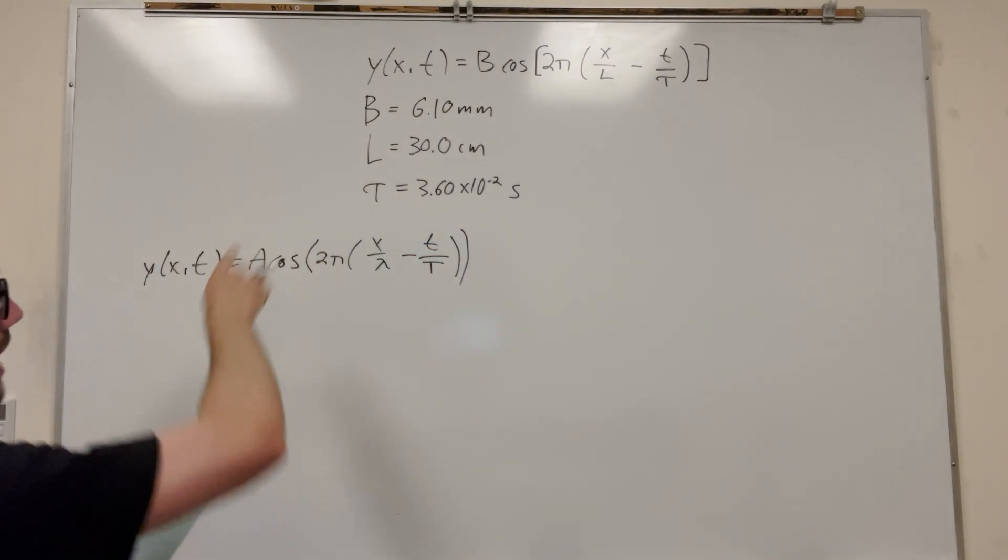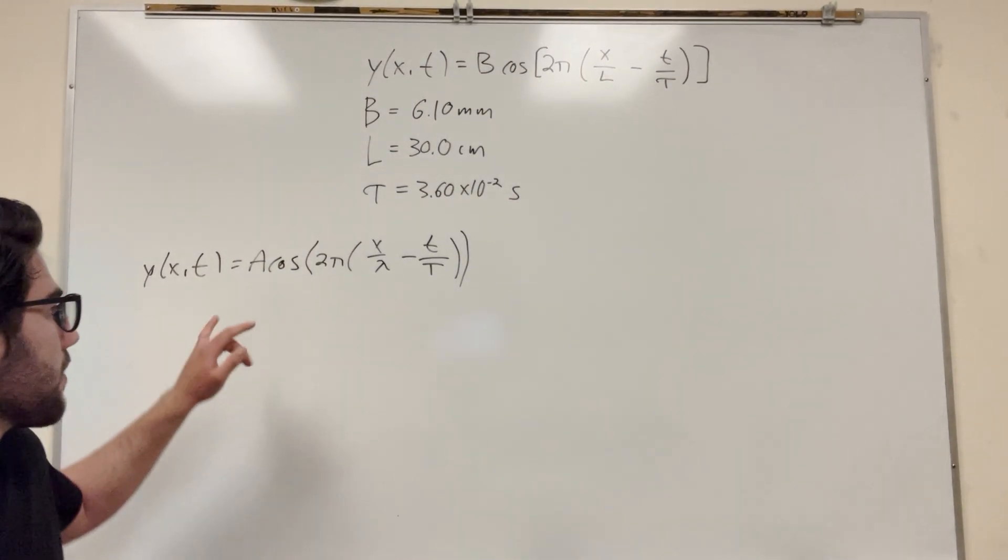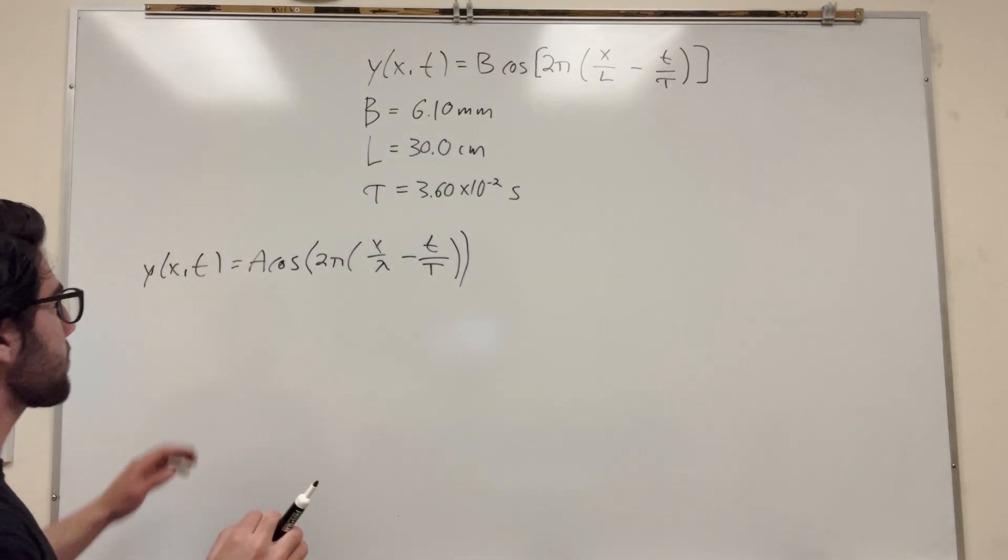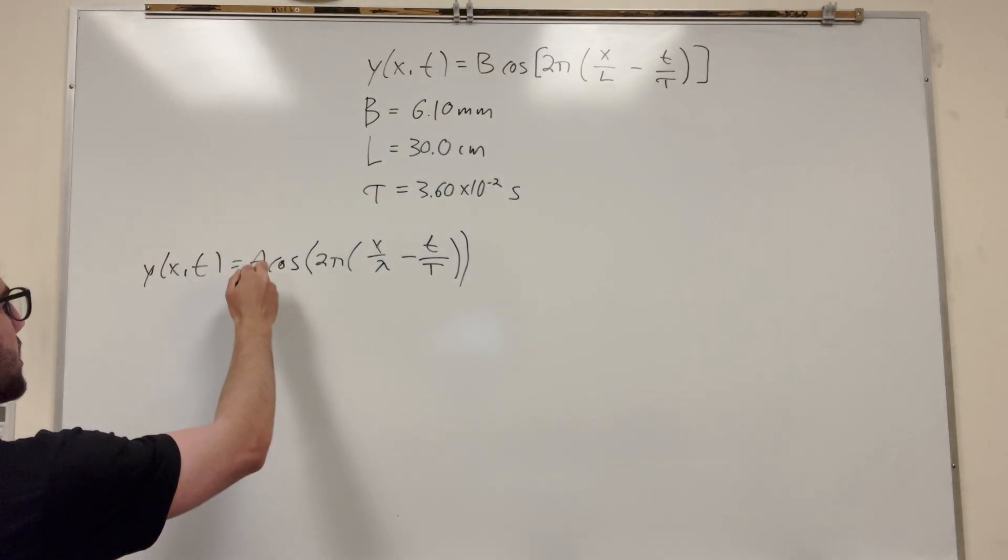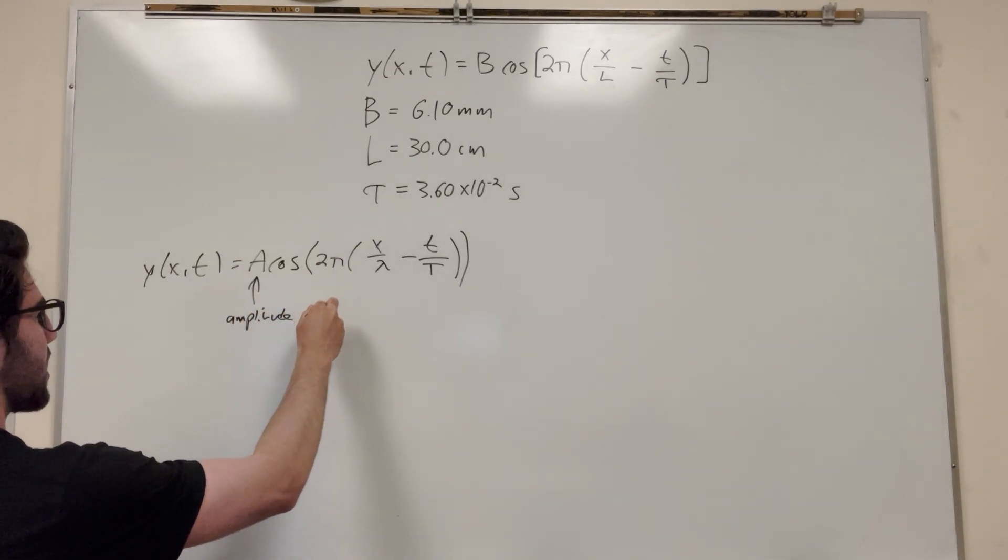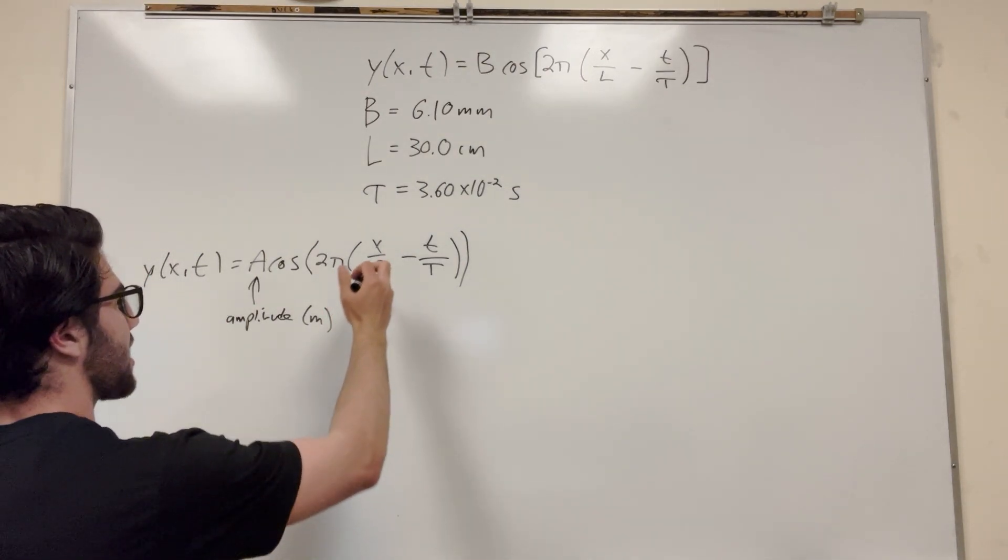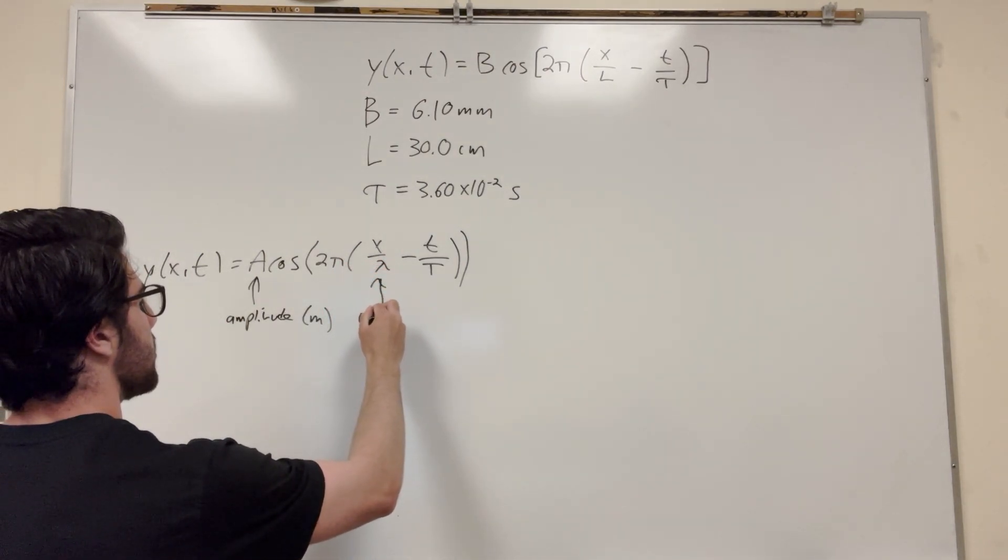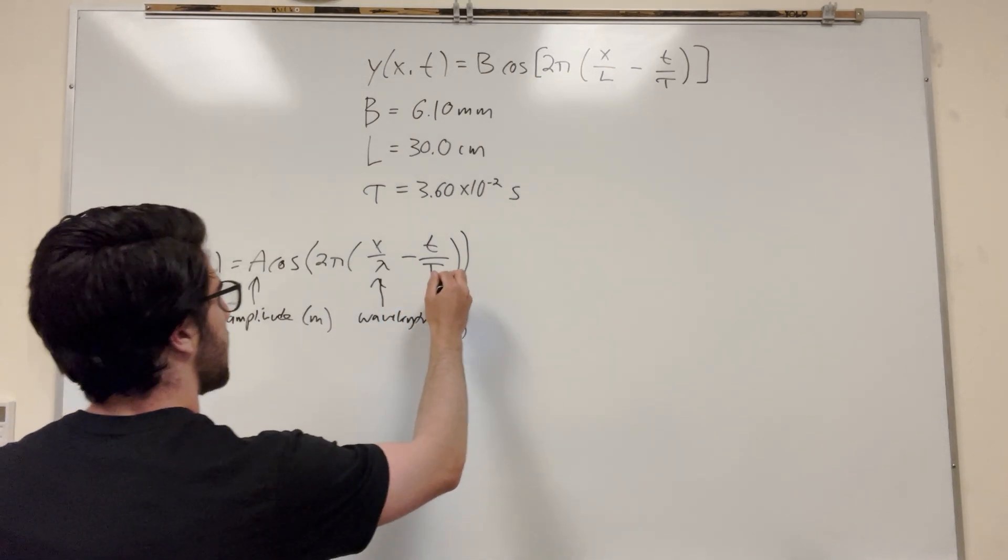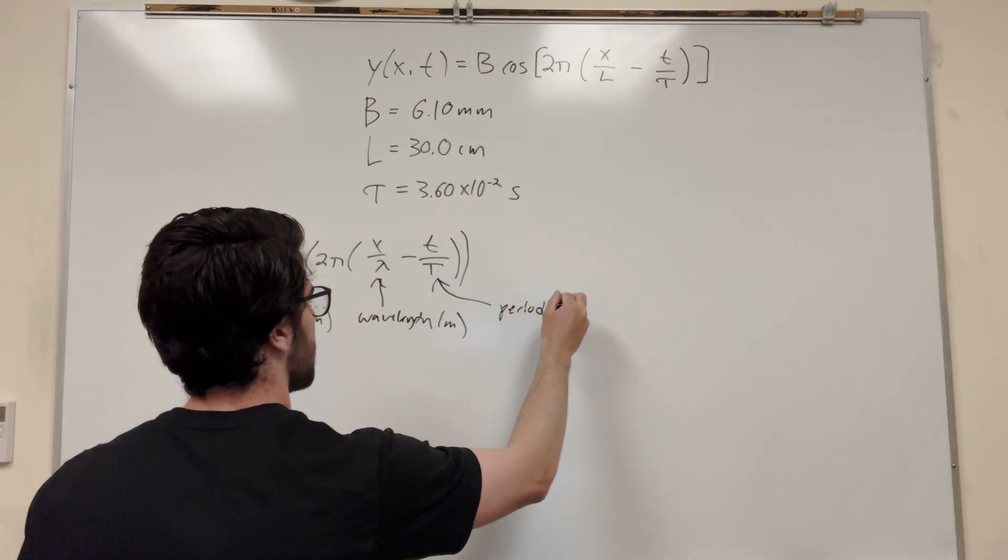lambda minus t over capital T. So this is a function that is in the form of just with different variables, right? And in this, we have these three variables which are the same as b, l, and tau. So A, and this is the amplitude in meters, any measurement unit of distance. This lambda here is wavelength, also in meters. And then this capital T here is period in seconds. That's how long it takes to go.